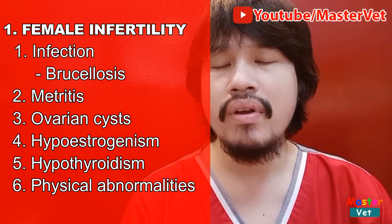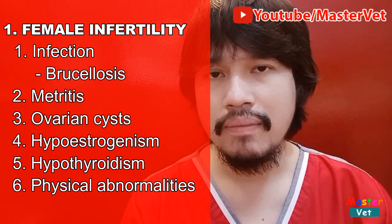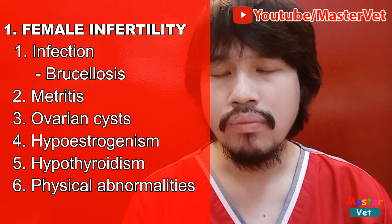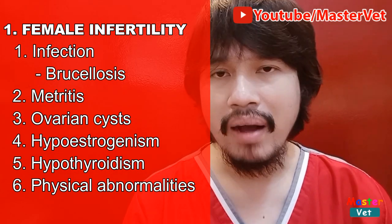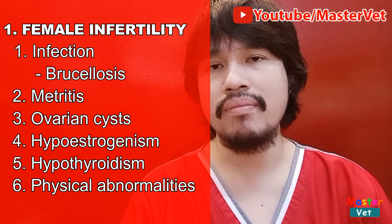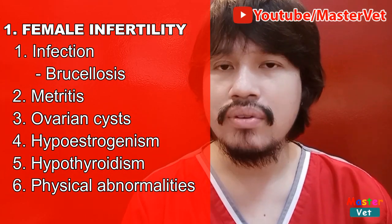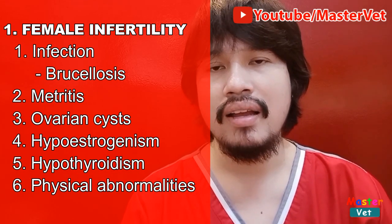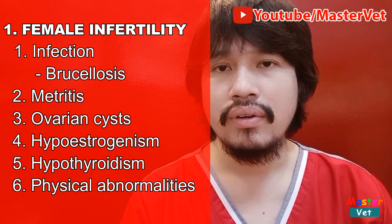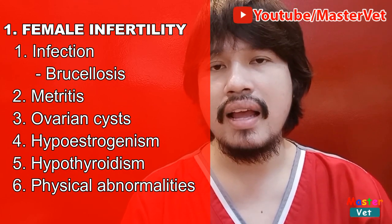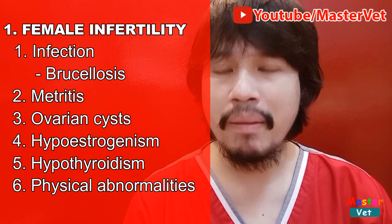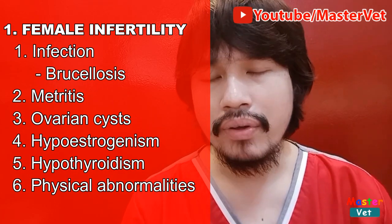Kapag may metritis, may infection yung womb o yung bahay bata, ito ay namamaga. It prevents yung fertilized egg na na-fertilize nung sperm na ma-implant doon sa uterus dahil yung uterus ay namamaga. Kapag may ovarian cyst, so it prevents ovulation. Kapag may problema doon sa ovary ng aso, may cyst, naapektuhan yung pagpapalaki ng itlog. So, mababaog yung babaeng aso.